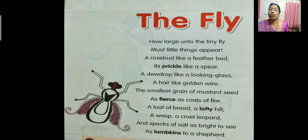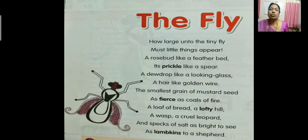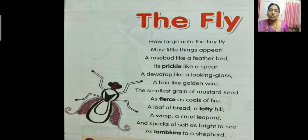I will read the poem. All of you listen carefully and look into your book. 'How large unto the tiny fly must little things appear. A rose bud like a feather bed, its prickle like a spear. A dew drop like a looking glass, a hair like golden wire. The smallest grain of mustard seed as fierce as coals of fire. A loaf of bread, a lofty hill, a wasp, a cruel leopard. And specks of salt as bright to see as lambkins to a shepherd.'